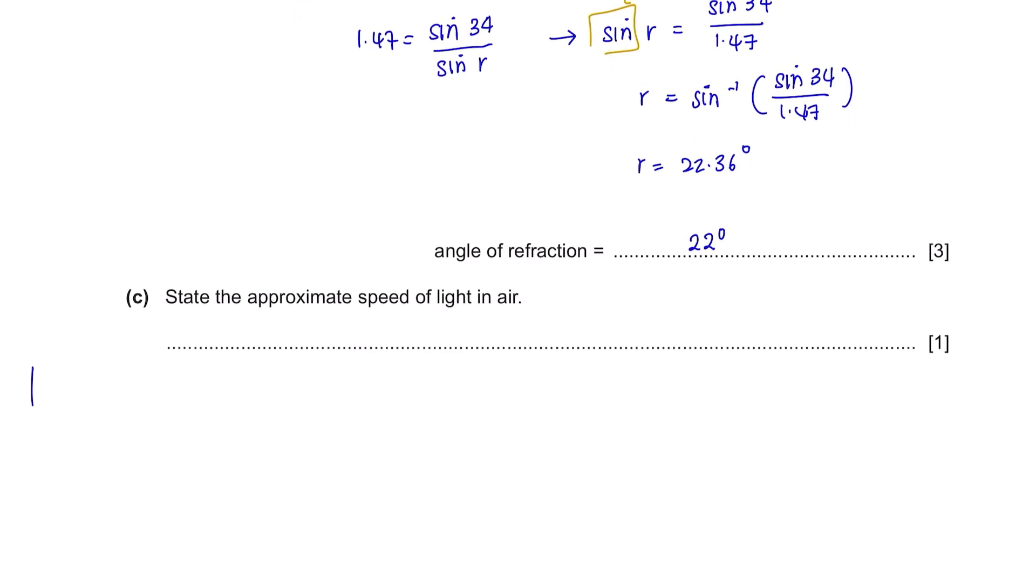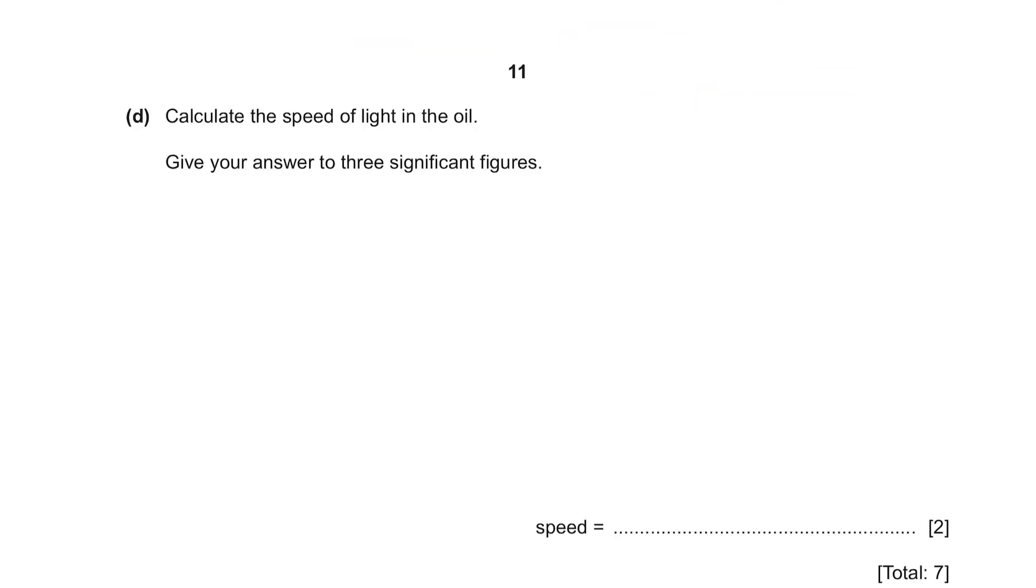Next, question C: State the approximate speed of light in air. This is a value that you have to memorize. The speed of light in air is 3 times 10 to the power of 8. Do not forget your unit, meters per second. Another value related that you should know is the speed of sound in air, which is approximately 330 to 350 meters per second. Question D: Calculate the speed of light in the oil. Give your answer to three significant figures. When a ray of light moves from one medium to another medium, the speed of the light would change.